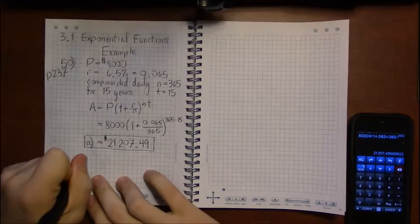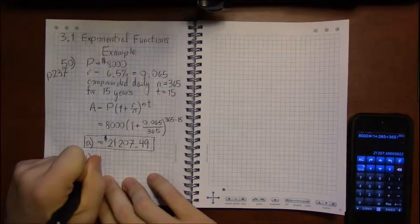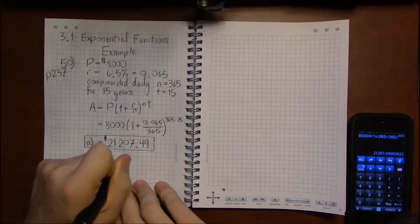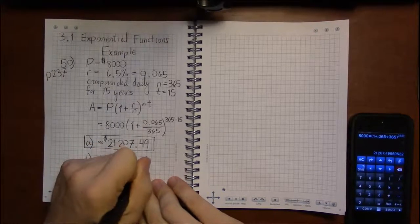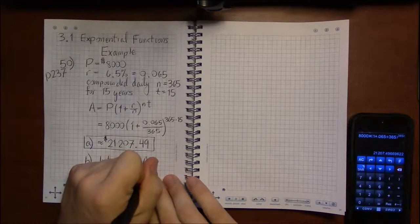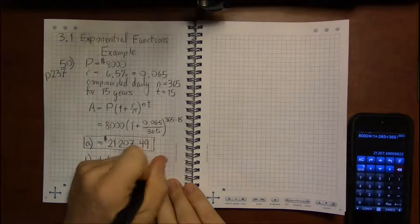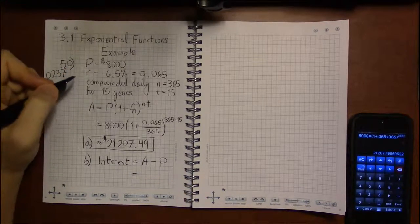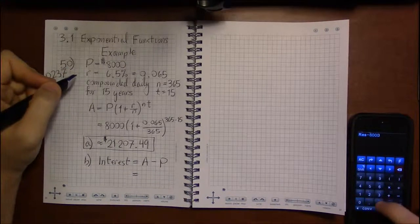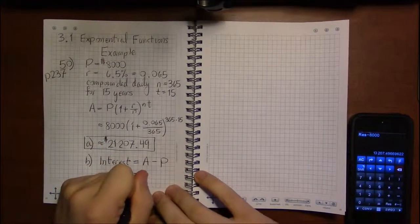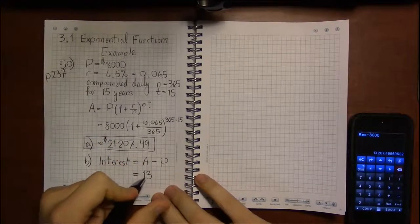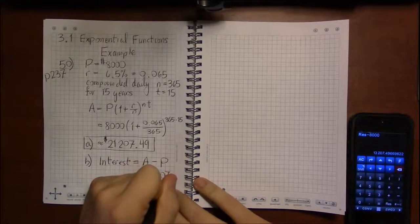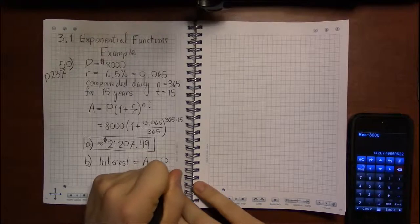And to calculate how much interest was earned over that period, we're going to take this final amount, our value that we got for A, and subtract away how much we initially put into the account, the value for P. And when we do that, we get $13,207.49.